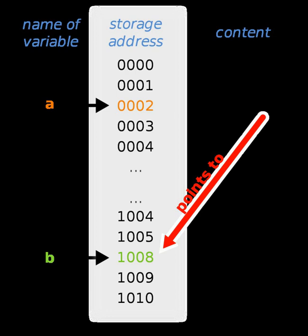This assigns the value of the address of a to PTR. For example, if a is stored at memory location hexadecimal 8130, then the value of PTR will be hexadecimal 8130 after the assignment. To dereference the pointer, an asterisk is used again. This means take the contents of PTR, which is hexadecimal 8130, locate that address in memory and set its value to 8. If a is later accessed again, its new value will be 8.